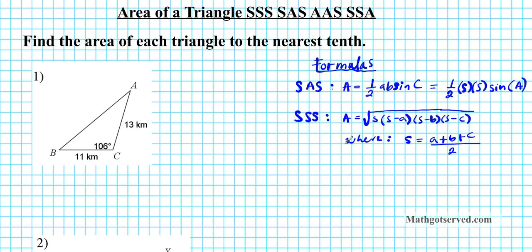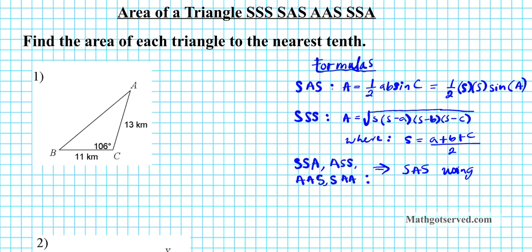The second case is also pretty straightforward. But what if we have SSA? SSA is equivalent to ASS, whichever way you want to look at it. Or if we have AAS, which is equivalent to SAA. If you have these cases, what you have to do is convert them into an SAS situation using the law of sines. And when you convert these into an SAS situation, then you simply use the SAS formula to finish the problem off. So these are the cases we're going to be looking at.